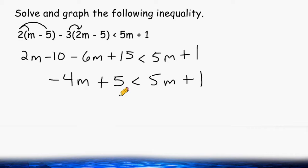Now notice we have a variable on both sides of our inequality symbol. So what we have to do is get that variable on one side of our inequality. We can start by getting rid of the 5m on this side and sending it over to that side to combine it with the negative 4m.